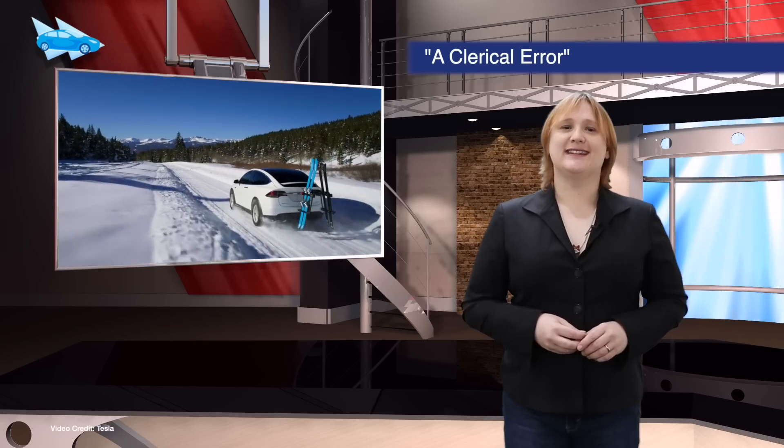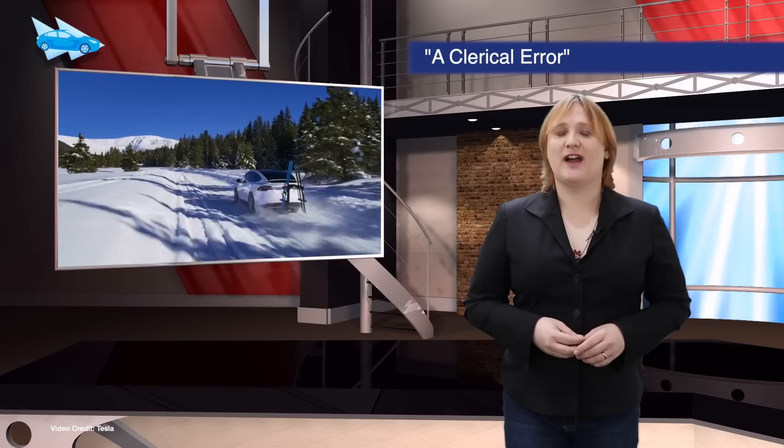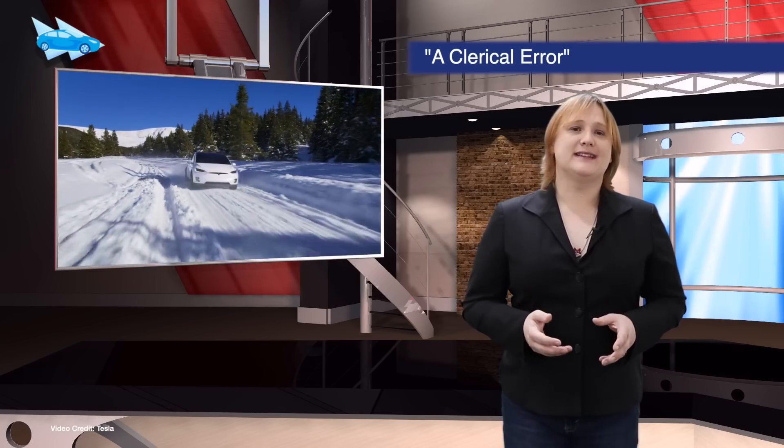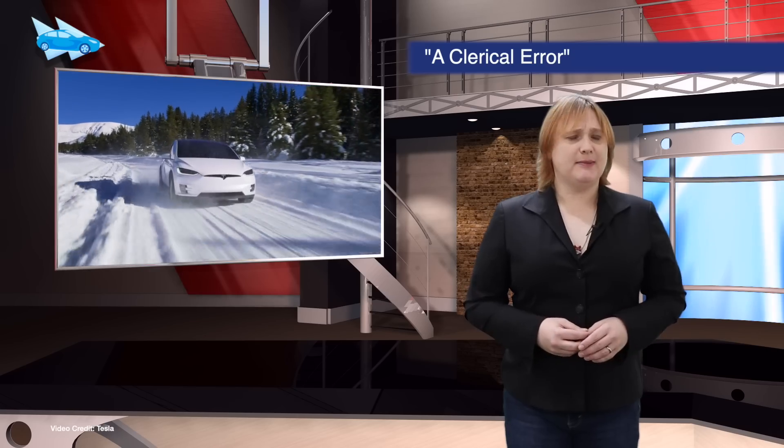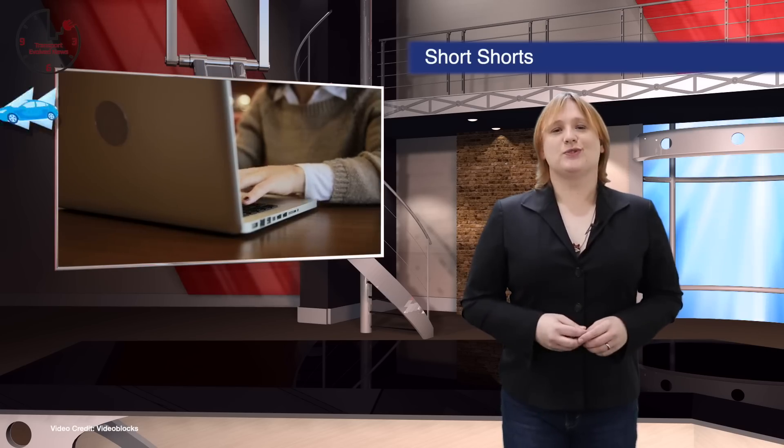Tesla has resolved an outstanding issue with the state of Nevada that caused it to underpay six hundred and fifty-five thousand dollars in unemployment tax for workers at its gigafactory. Tesla is calling it a clerical error, but only paid after the state took it to court. And that's your short shorts.